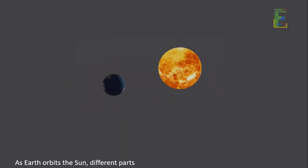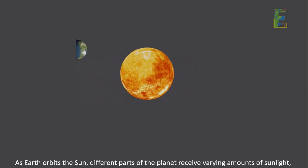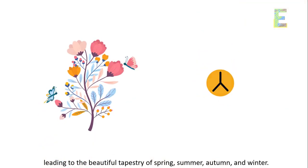As Earth orbits the Sun, different parts of the planet receive varying amounts of sunlight, leading to the beautiful tapestry of spring, summer, autumn, and winter.